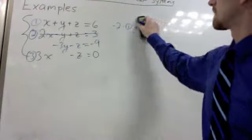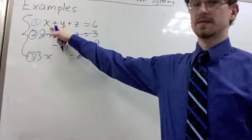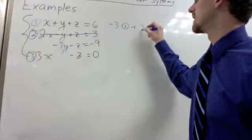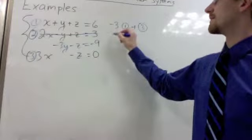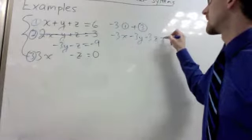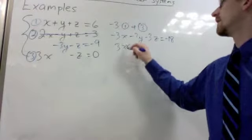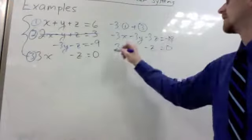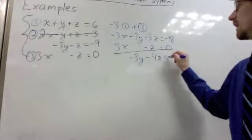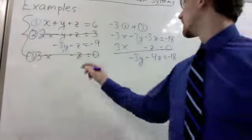Now, this work is no longer needed, although on your paper, you can keep working downward. To get rid of our x here, multiply this first equation by negative 3. Negative 3 times equation 1 plus equation 3. Negative 3 times equation 1 gets us negative 3x minus 3y minus 3z equals negative 18. And then we can add equation 3 and get negative 3y minus 4z equals negative 18.